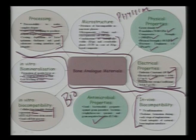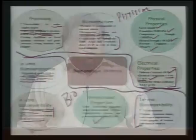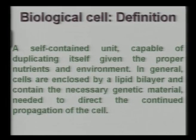In vivo biocompatibility properties include no inflammation, ideally neo-bone formation at early implantation stages, and good structural integrity at the natural bone-implant interface — meaning no gap between the biomaterial and natural bone. Biological tissues contain self-organized aggregates of multiple cell types in a particular fashion, so it is important to understand the properties of cells and what is meant by a biological cell.